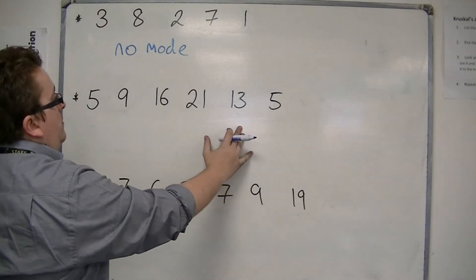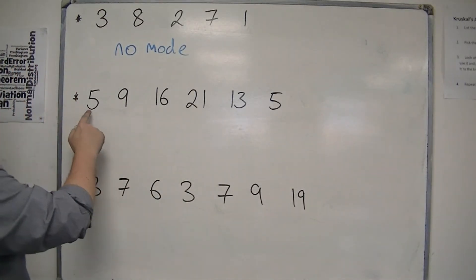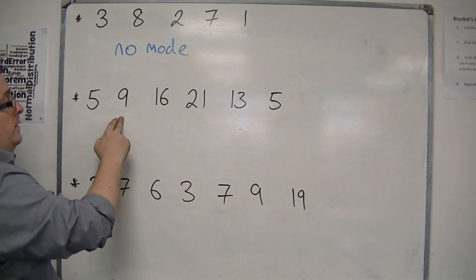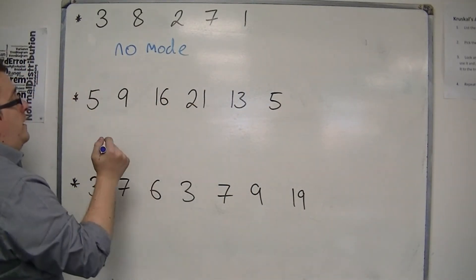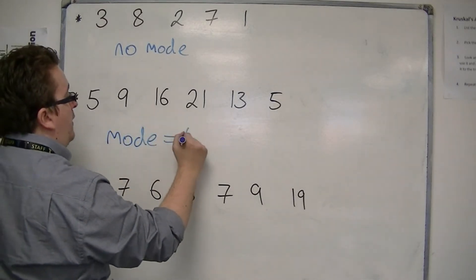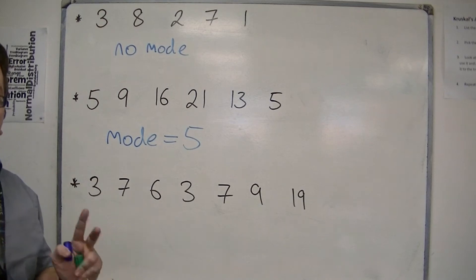In our second example, however, we can see that there are two fives. There's one of every other, but there are two fives. So the mode is five because that turns up twice, while all the other numbers turn up once.